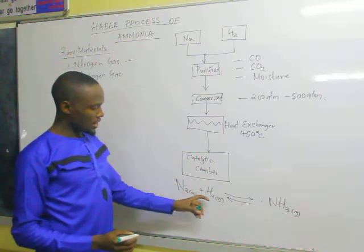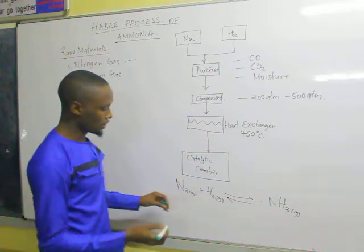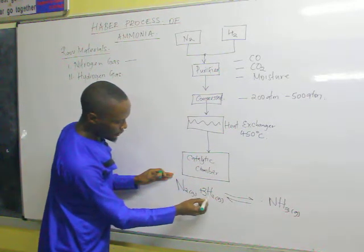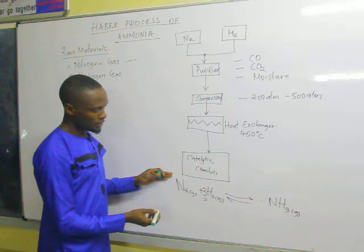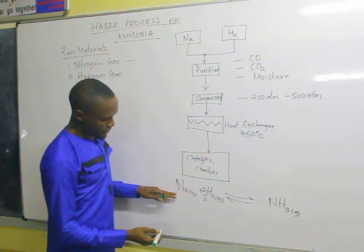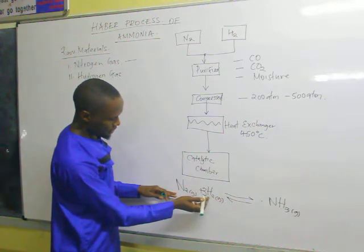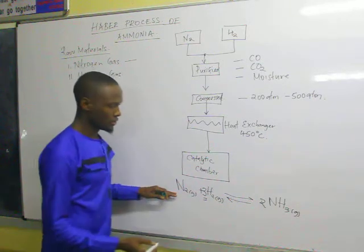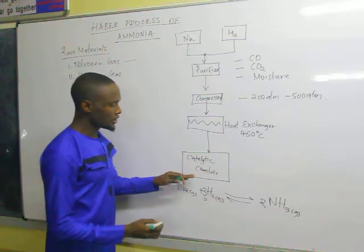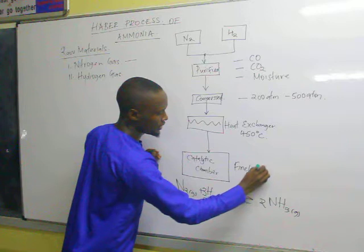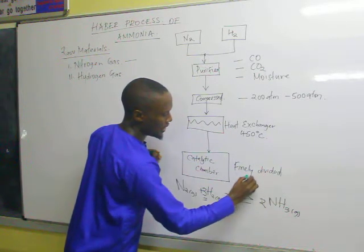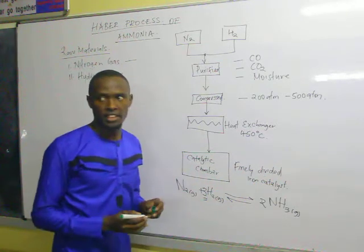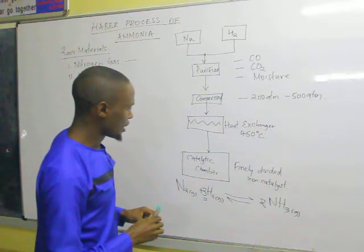Nitrogen and hydrogen react in a ratio of 1 to 3. That means 1 mole of nitrogen reacts with 3 moles of hydrogen to form ammonia. Balancing the equation: N₂ + 3H₂ → 2NH₃. The catalyst used here is finely divided iron.